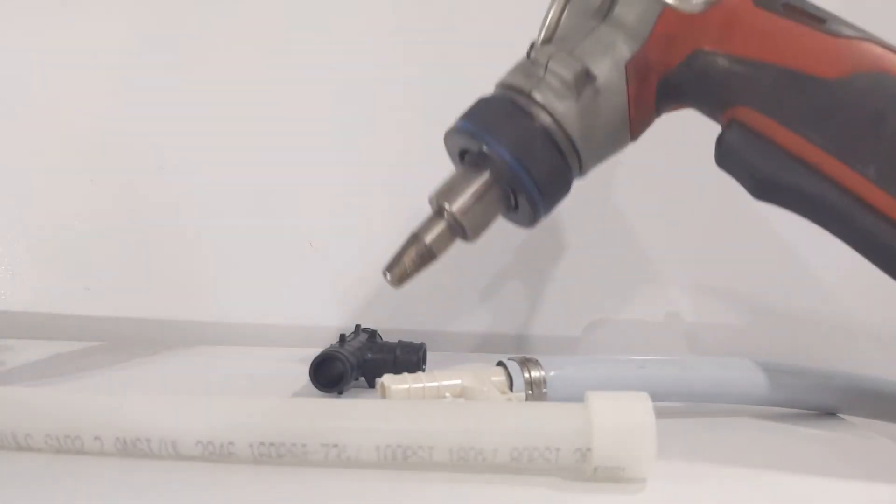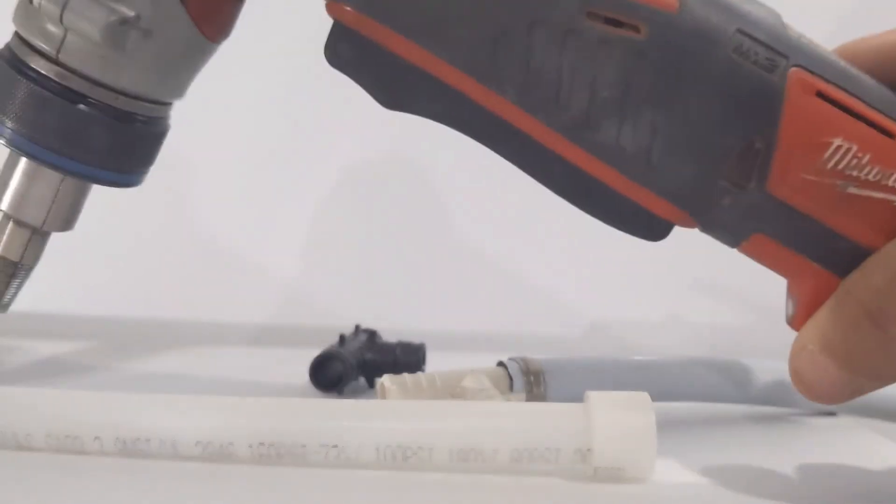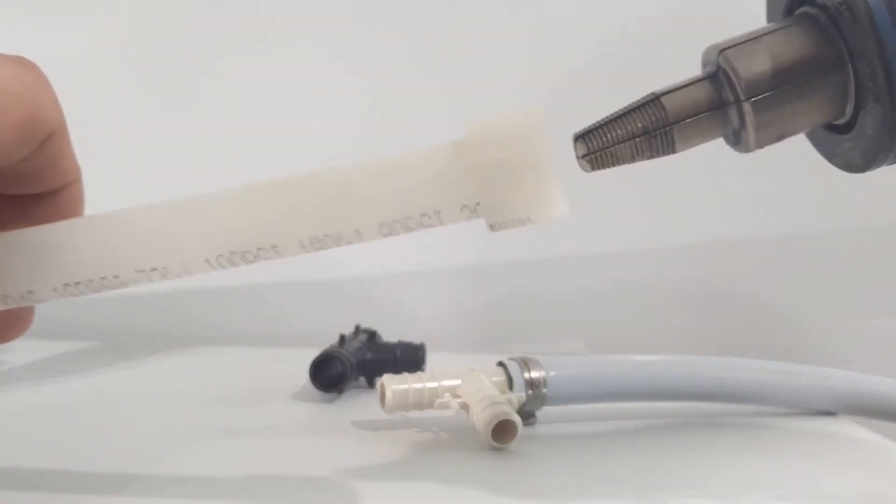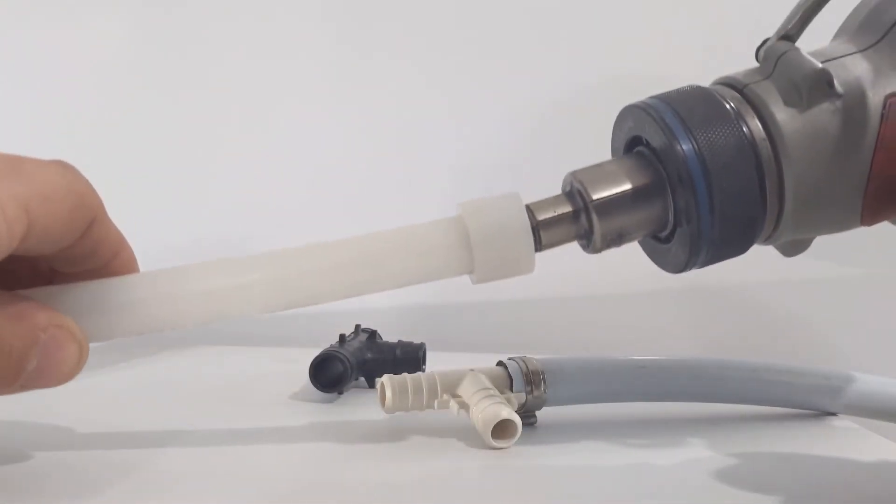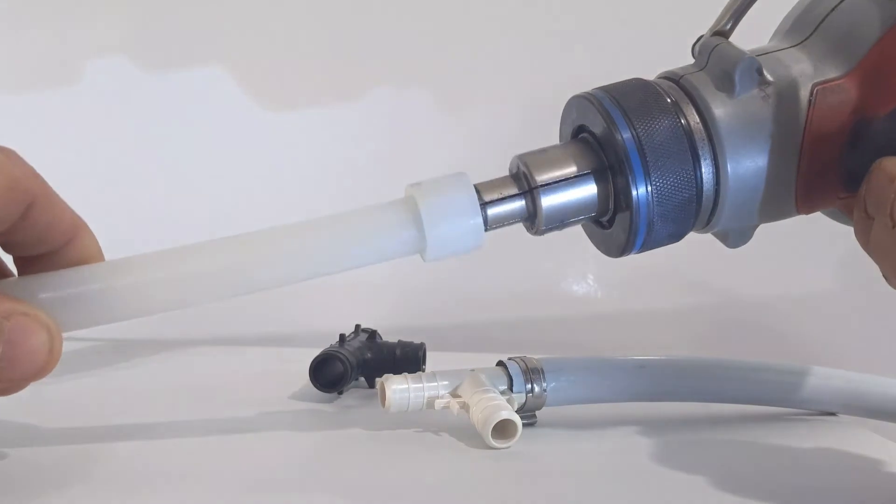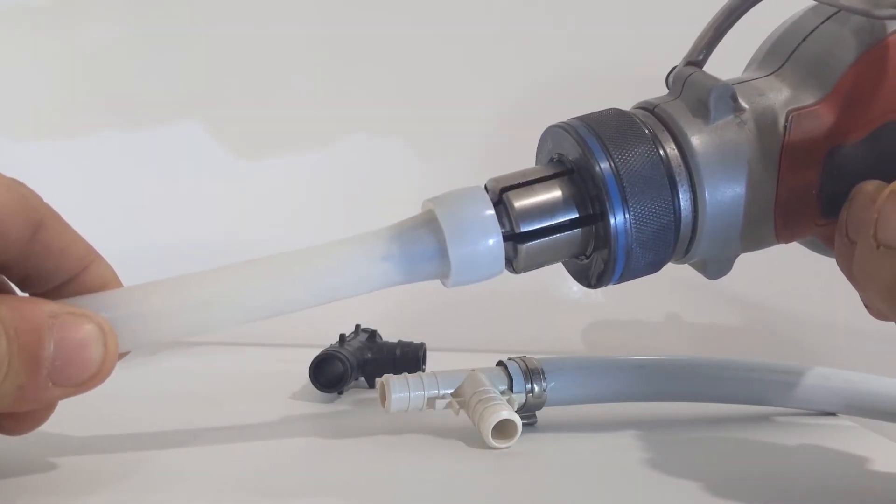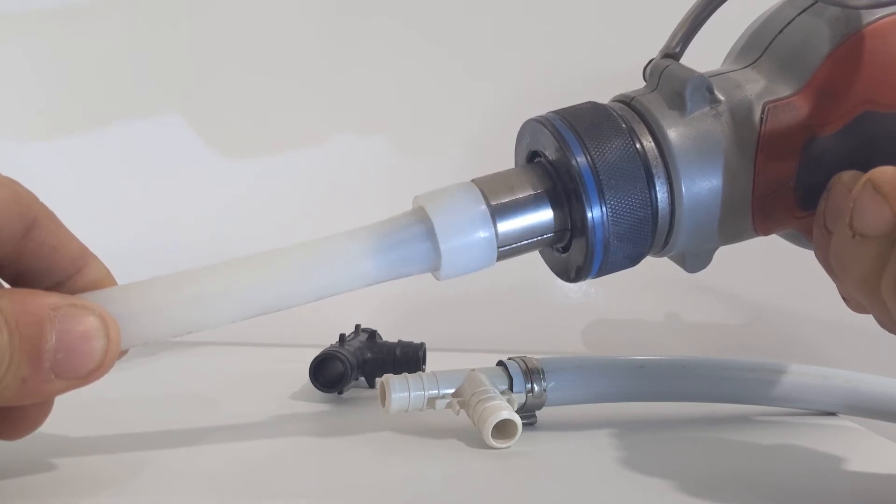So next we'll use Milwaukee's expanding tool. Now they do make hand expanders too, similar to the crimp style where you actually use the tool to force the ring open. But this is an electric one, battery powered. You can see here, it spins as it's opening it.